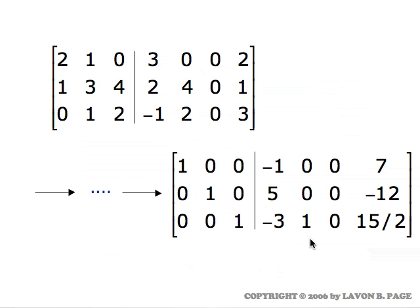The reason you can do that is because the row operations that you choose don't have anything to do with what's on the right. The row operations are totally determined by what's happening in the coefficient matrix, which was the same for all the systems. So you can solve them separately using the same sequence of row operations, or combine it all and solve them all at once with just one pass through.